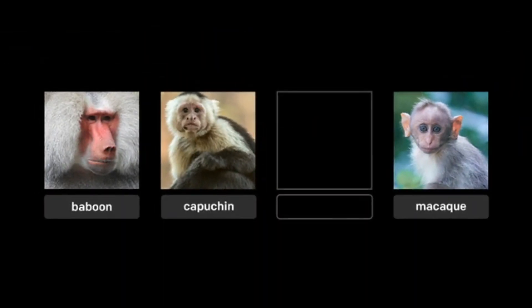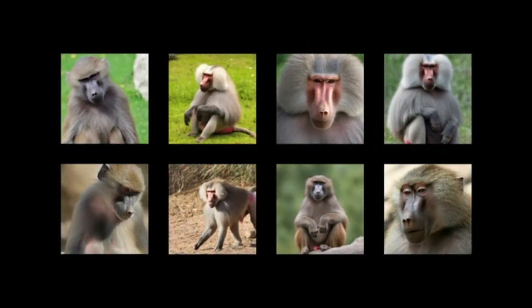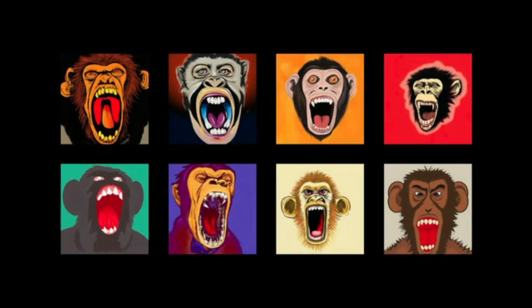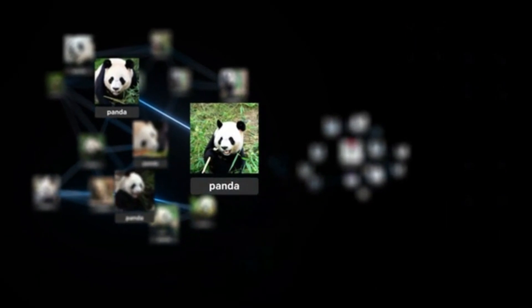DALL-E can also be limited by gaps in its training. For example, if you type 'baboon,' DALL-E 2 has learned what a baboon is through images and accurate labels, so it will generate a lot of great baboons. But if you type 'howler monkey' and it hasn't learned what a howler monkey is, DALL-E 2 will give you its best guess — like a howling monkey.